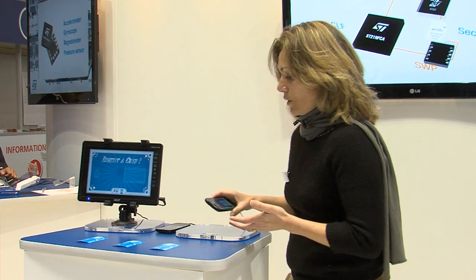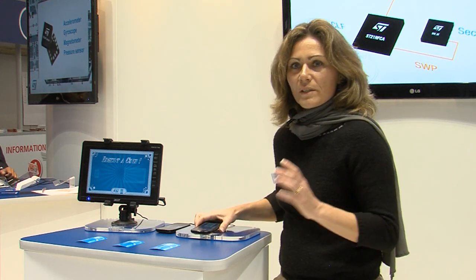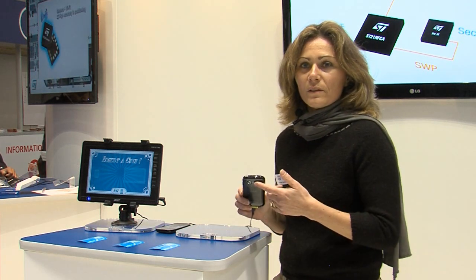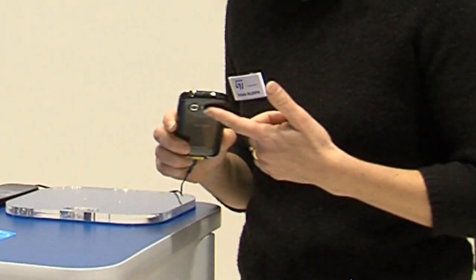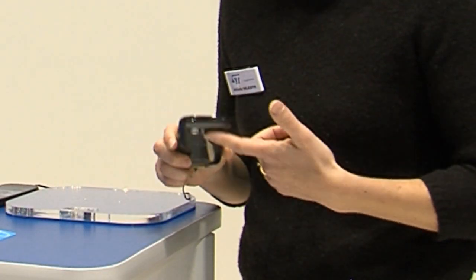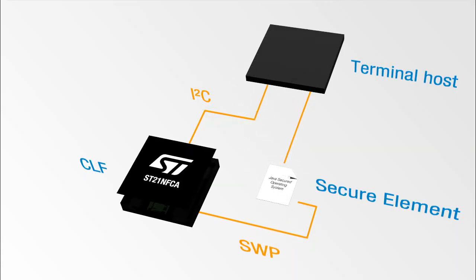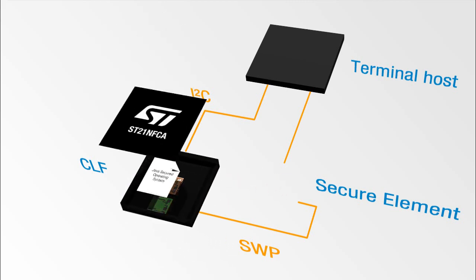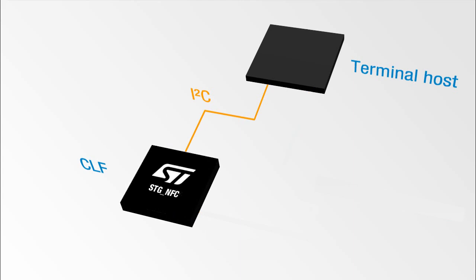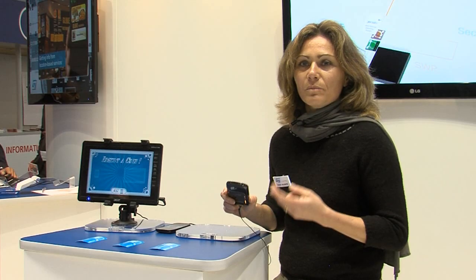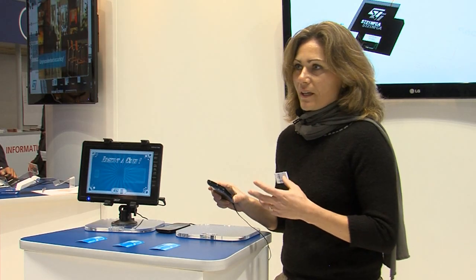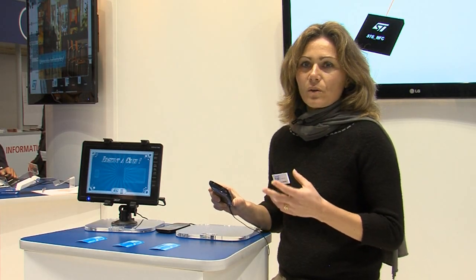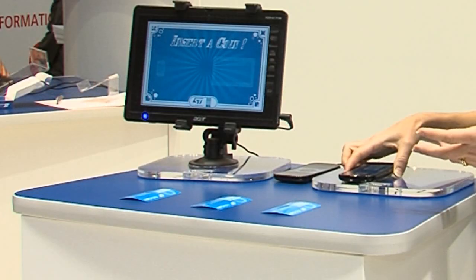We also have a stacked solution — the STG NFC embedded here. With this we can address two secure elements in the same device. Thanks to the AAD routing mechanism, we will select the right secure element depending on where the application is implemented.